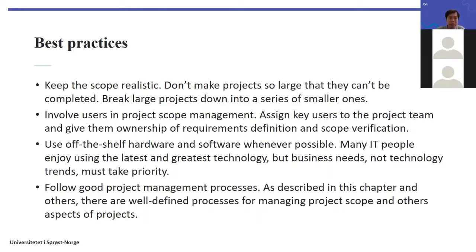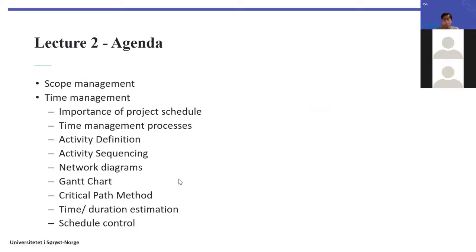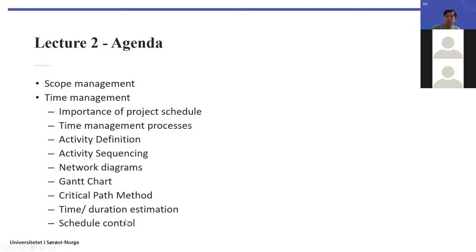Now I will move to Part Two: time management. We'll talk about why we should manage and control time, activities within time management — which include activity definition and sequencing — and the important tool which is network diagrams. Among network diagrams, Gantt chart is the most popular one, and you will need to create a Gantt chart for your project plan. We'll also talk about estimations and schedule control.